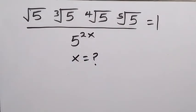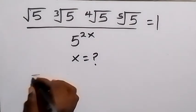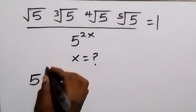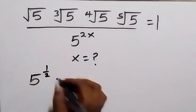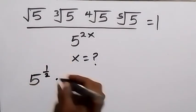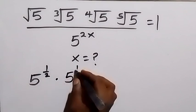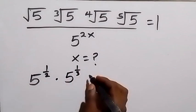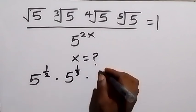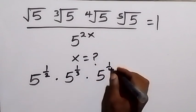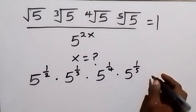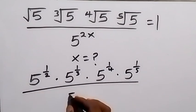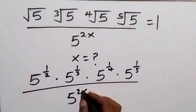We can rewrite what we have: root 5 is 5 raised to power 1/2, then times cube root of 5 written as 5 raised to power 1/3, then times 5 raised to power 1/4, then times 5 raised to power 1/5, then divided by 5 raised to power 2x, equals 1.